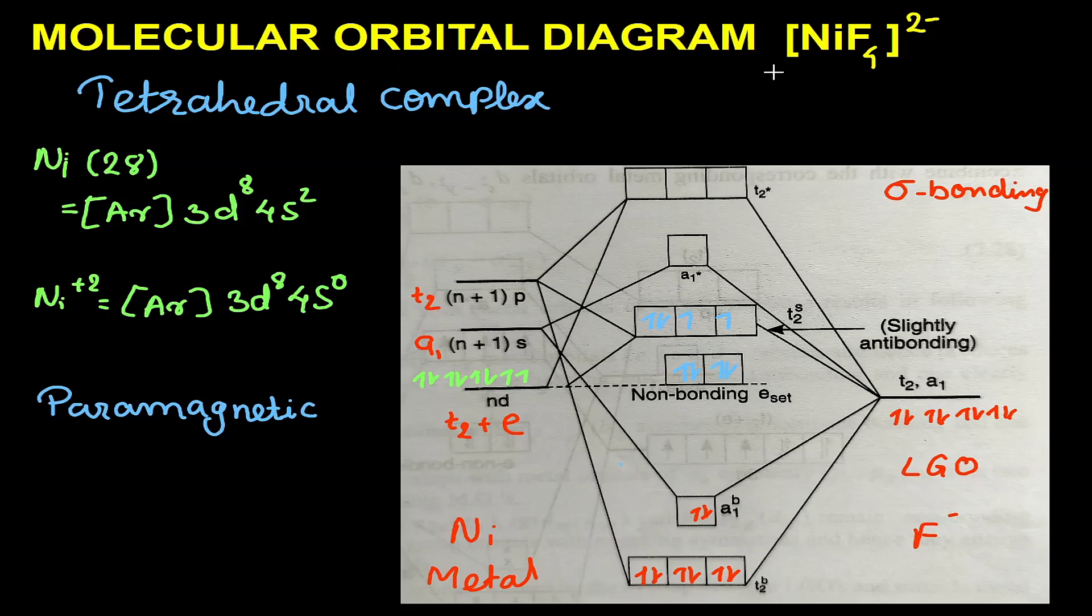Today we will be looking at the molecular orbital diagram of NiF₄²⁻, which is a tetrahedral complex. The electronic configuration of nickel (28) is [Ar] 3d⁸ 4s². In this particular complex, the oxidation state of nickel is +2.